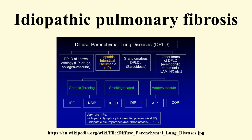The key issue facing clinicians is whether the presenting history, symptoms, radiology, and pulmonary function testing are collectively in keeping with the diagnosis of IPF or whether the findings are due to another process. It has long been recognized that patients with ILD related to asbestos exposure, drugs, rheumatoid arthritis, scleroderma, and systemic sclerosis may be difficult to distinguish from IPF. Other differential diagnostic considerations include ILD related to mixed connective tissue disease, advanced sarcoidosis, chronic hypersensitivity pneumonitis, pulmonary Langerhans cell histiocytosis, and radiation-induced lung injury.